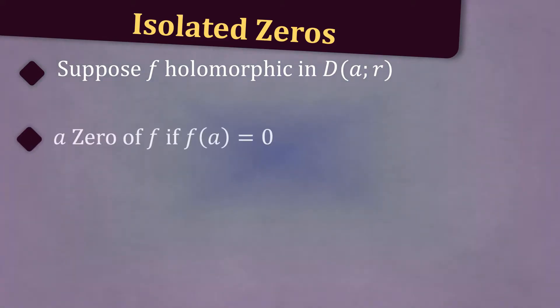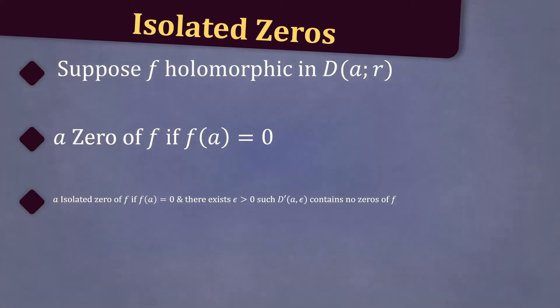Now, let's define isolated zeros. Suppose f is holomorphic in d of a and r, then a is a zero of f if f of a is equal to zero, and a is an isolated zero of f if f of a is equal to zero, and there exists some epsilon greater than zero, such that d dash of a and epsilon contains no zeros of f.